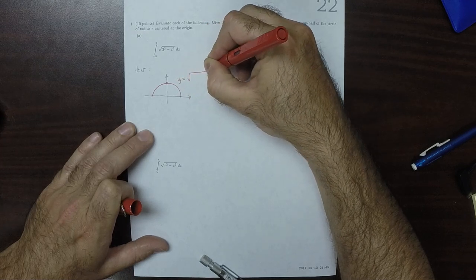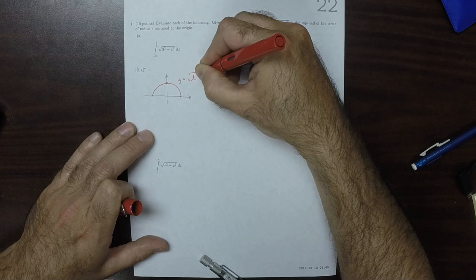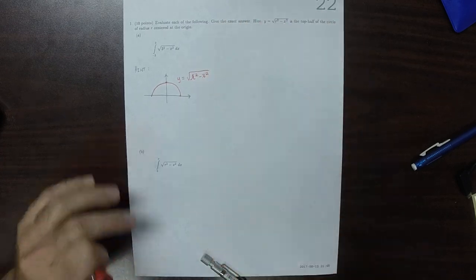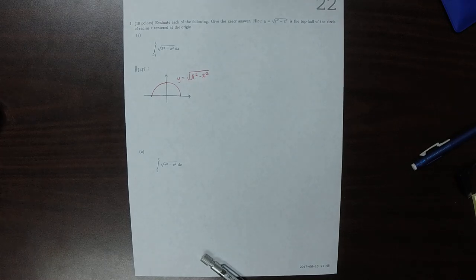y is the square root of r squared minus x squared, is the top half of the circle.